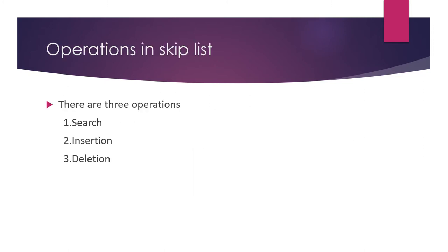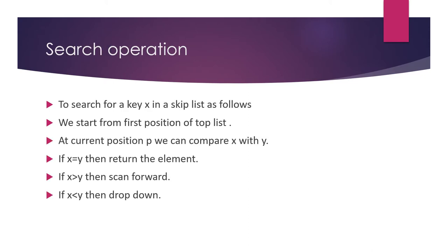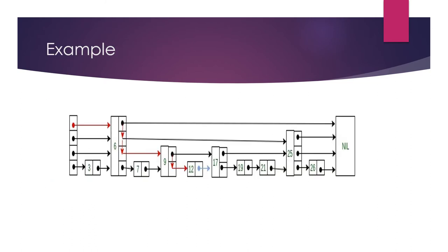There are three operations in a skip list: search, insertion, and deletion. For the search operation, let us consider x is a searching key. We start from the first position of the top list. At the current position we compare x with y. If x equals y, return the element — search found. If x is greater than y, scan forward to find the search item. If x is less than y, drop down and return no such key found.